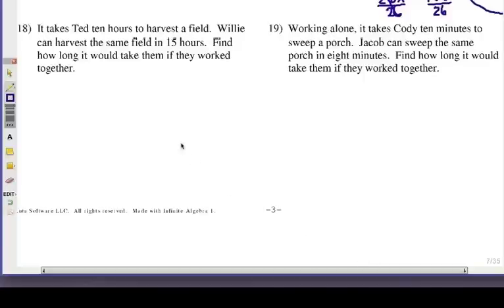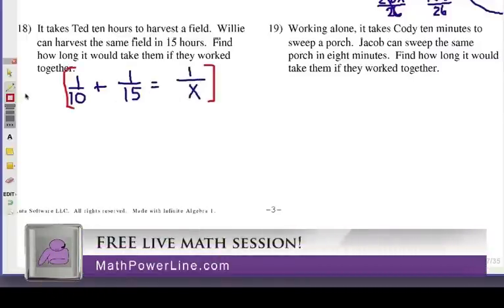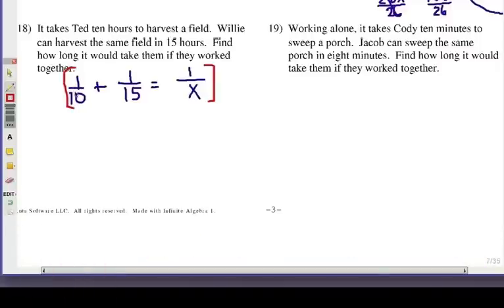Number 18, it takes Ted 10 hours to harvest a field, so there we go, 1 over 10. Together, they're going to be working, so Willie can do it in 15 hours, so 1 over 15 for Willie. Now together, it'll take them x hours. So, remember the shortcut. Here, I'm going to find a common denominator of 10 times 15 times x. Now, yes, there is a common factor of 5 involved between the 10 and the 15, but simply, and a little bit faster here, I'm going to just put together the 10 times the 15 times the x.